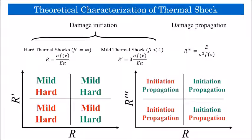Similarly, if we plot R versus R triple prime we learn how the material resists crack initiation versus crack propagation. For example, when the R value is comparatively large and the R triple prime value is comparatively small, the material is more resilient to damage initiation and less resilient to damage propagation.